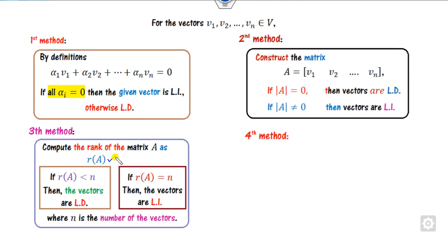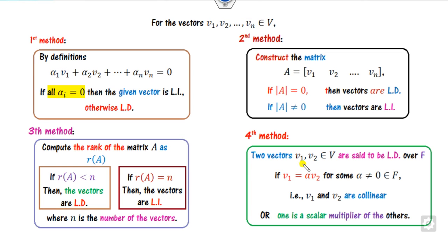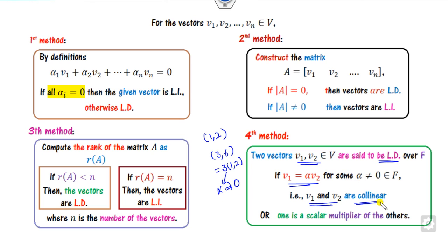The third method: compute the rank of matrix A. If the rank is less than n (the number of vectors), they are LD; if the rank equals n, they are LI. The fourth method applies to two vectors: if one vector can be written as a scalar multiple of the other — for example, (1,2) and (3,6) where (3,6) = 3×(1,2) — then they are LD (collinear). Otherwise they are LI.